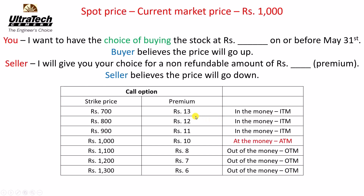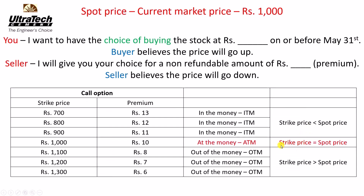All strike prices which are less than the spot price will have a higher premium than the at-the-money option. All strike prices which are greater than the spot price will have a lower premium than the at-the-money option. One more way to think about this: as the strike price increases in a call option, the premium goes on decreasing. So: at-the-money means strike price equal to or almost equal to spot price; in-the-money means strike price is less than spot price; out-of-the-money means strike price is higher than spot price.